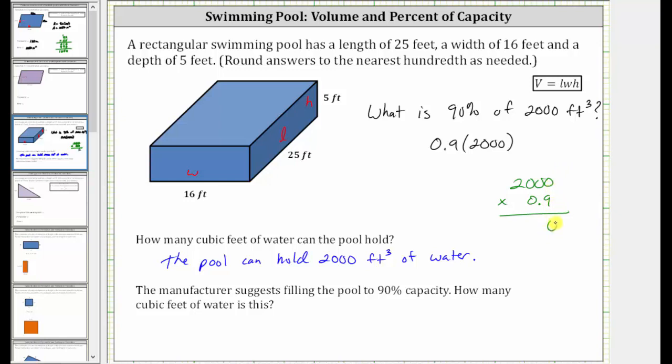So we have nine times zero, which is zero. Nine times zero, which is zero. Nine times zero, which is zero. And then finally, nine times two, which is 18.